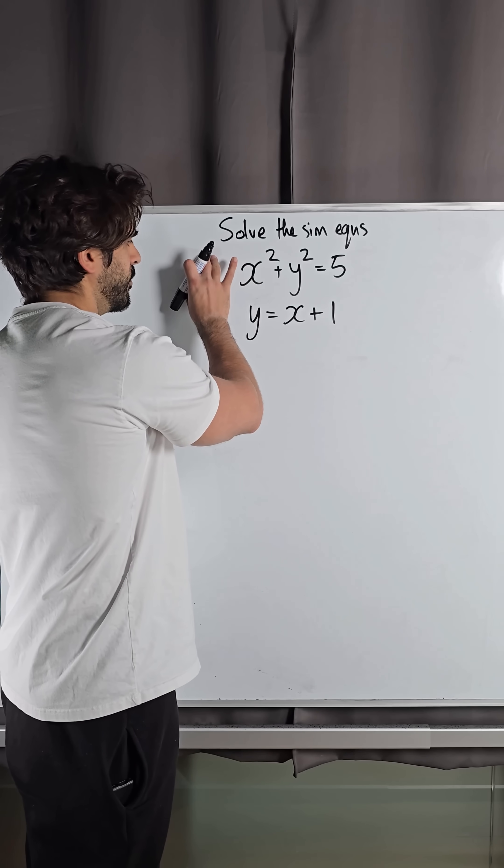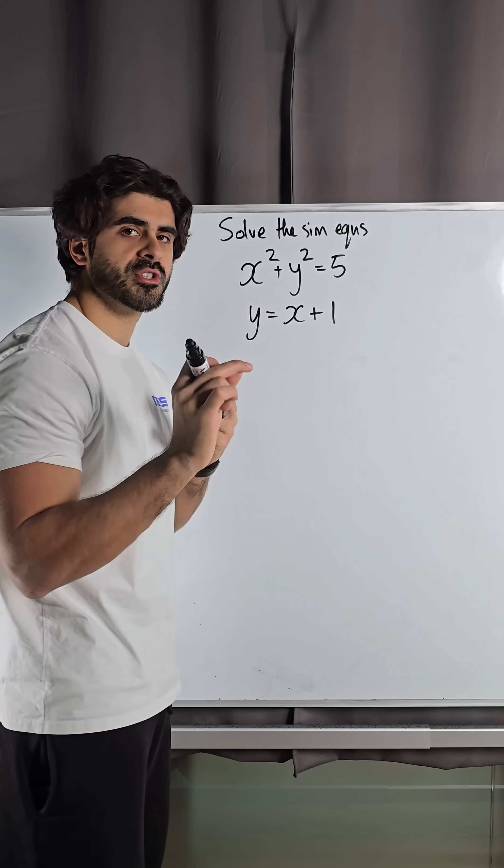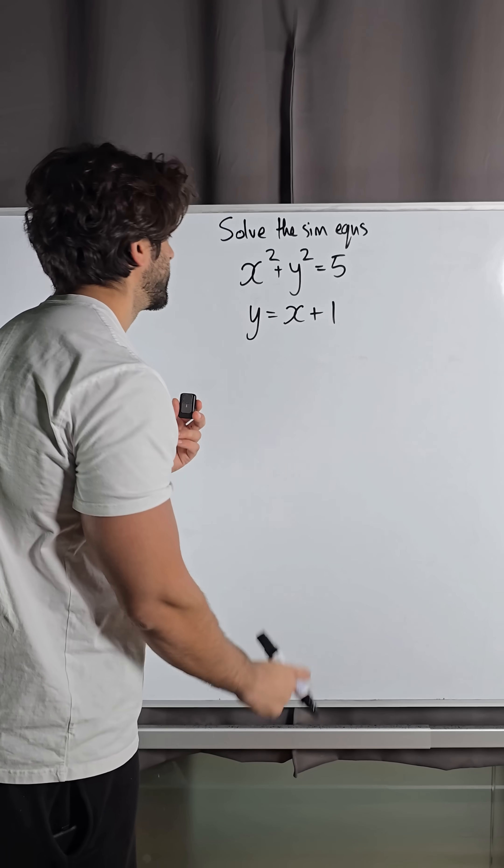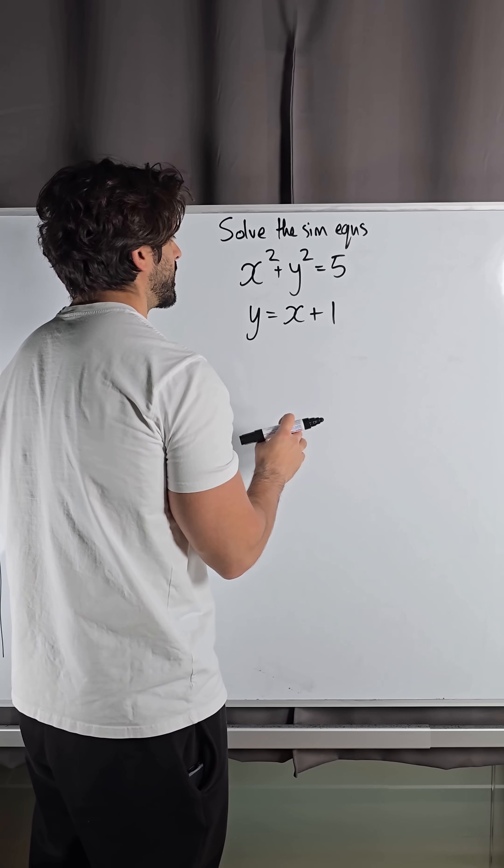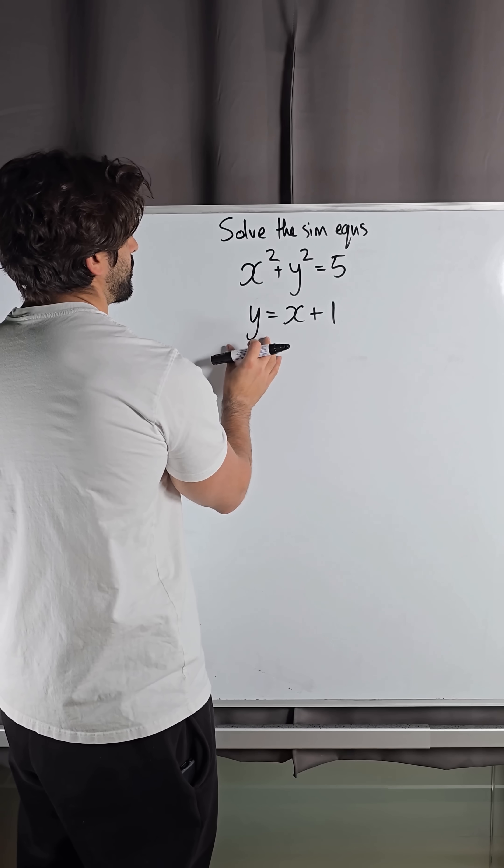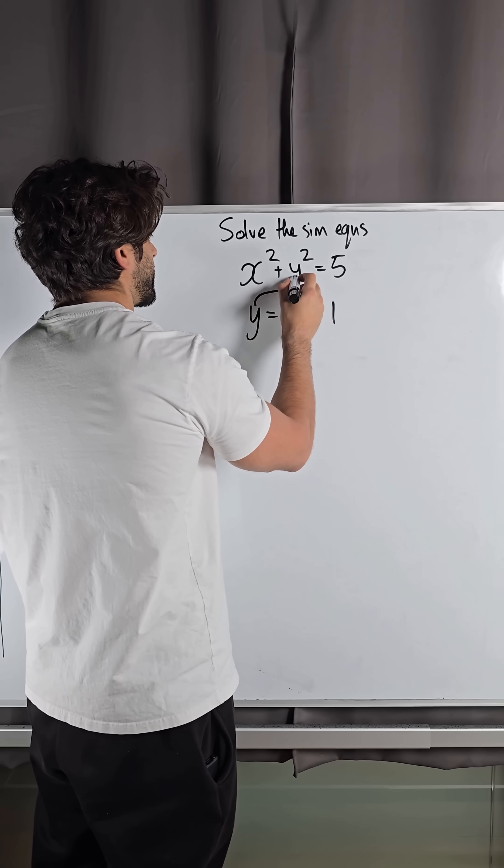Now when one is of quadratic form and one is linear, we can only use substitution. Substitution means you take your linear function and rearrange for either x or y and substitute. Here we've already rearranged for y, which is good. Take that and substitute it in here.